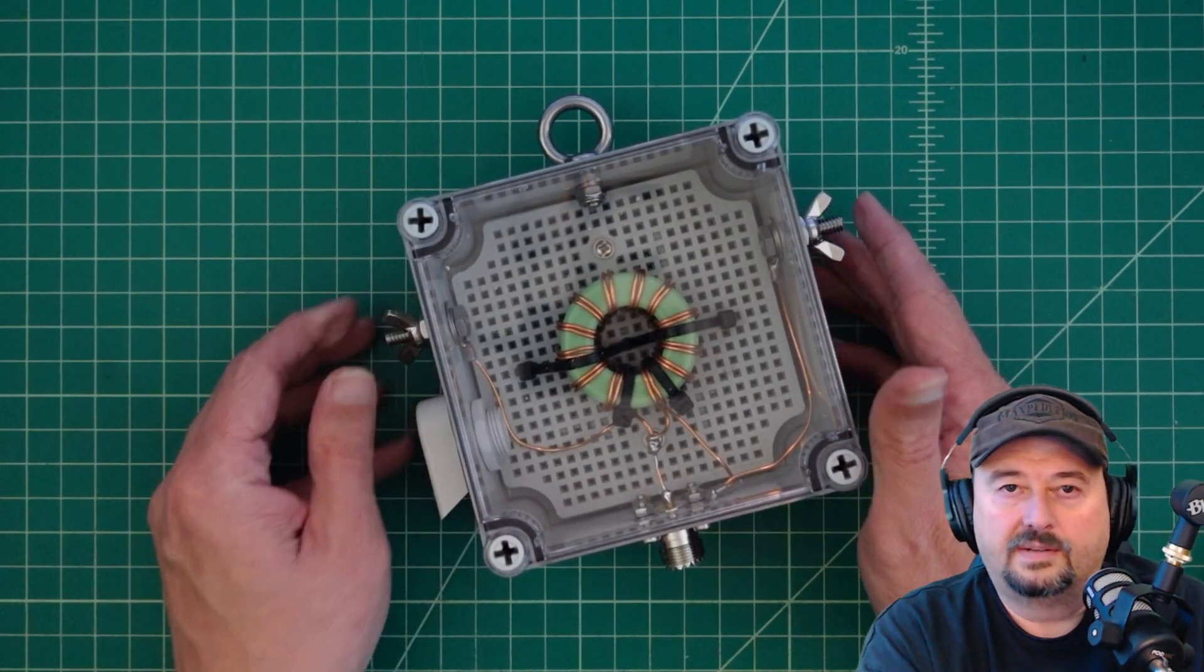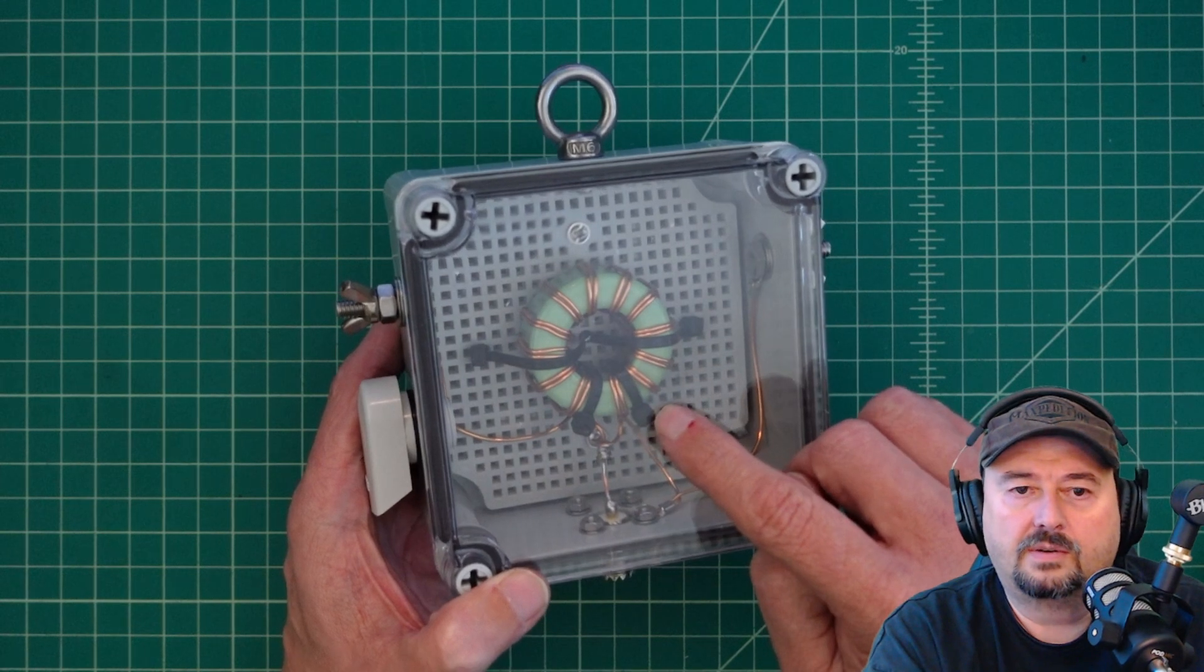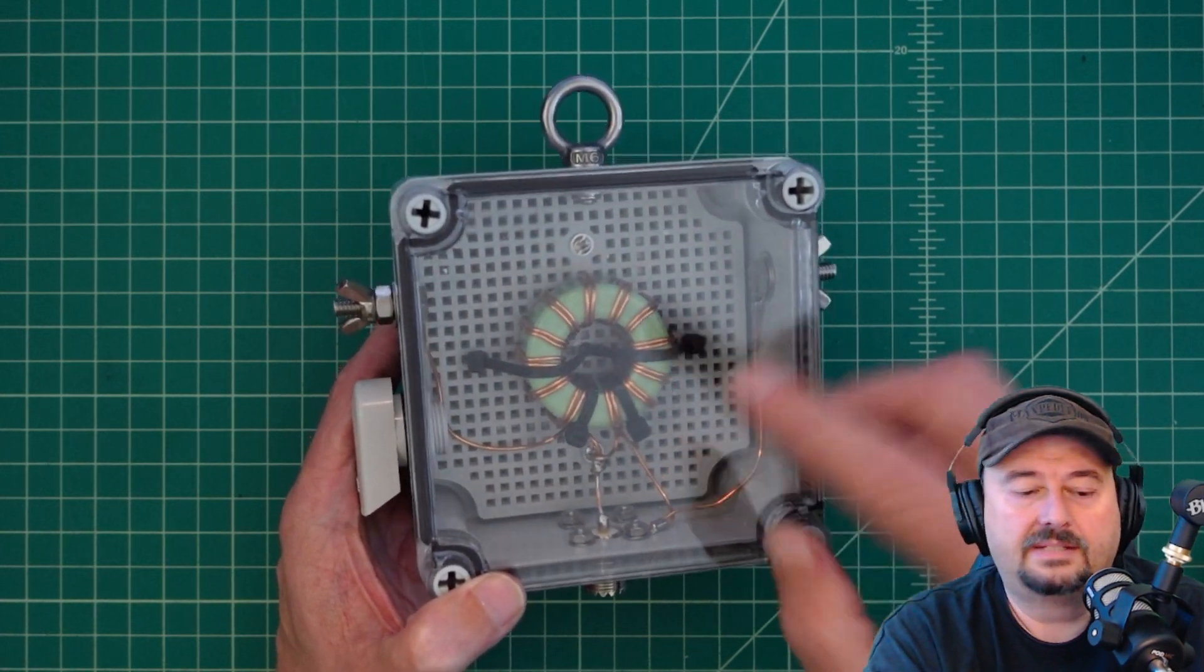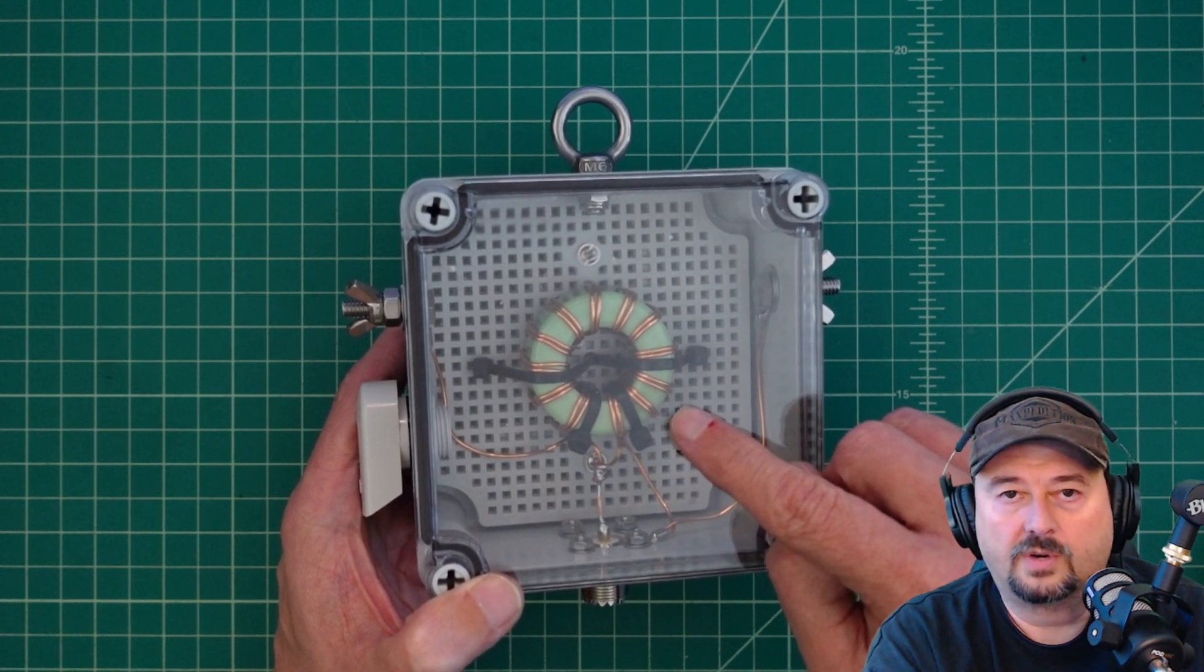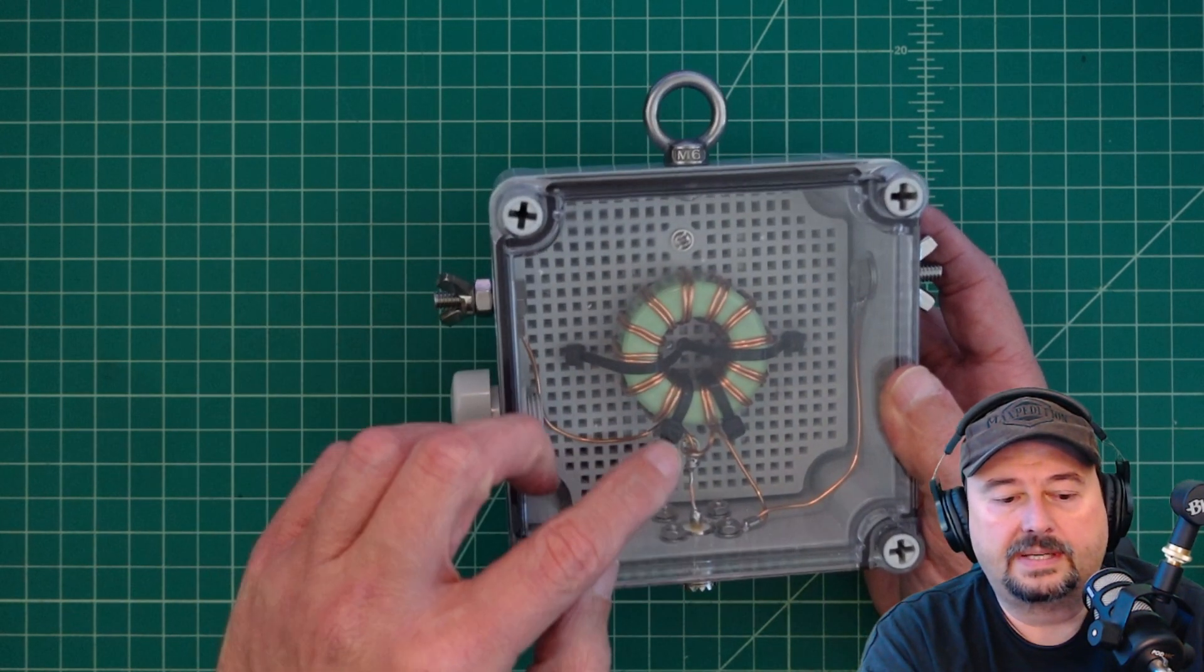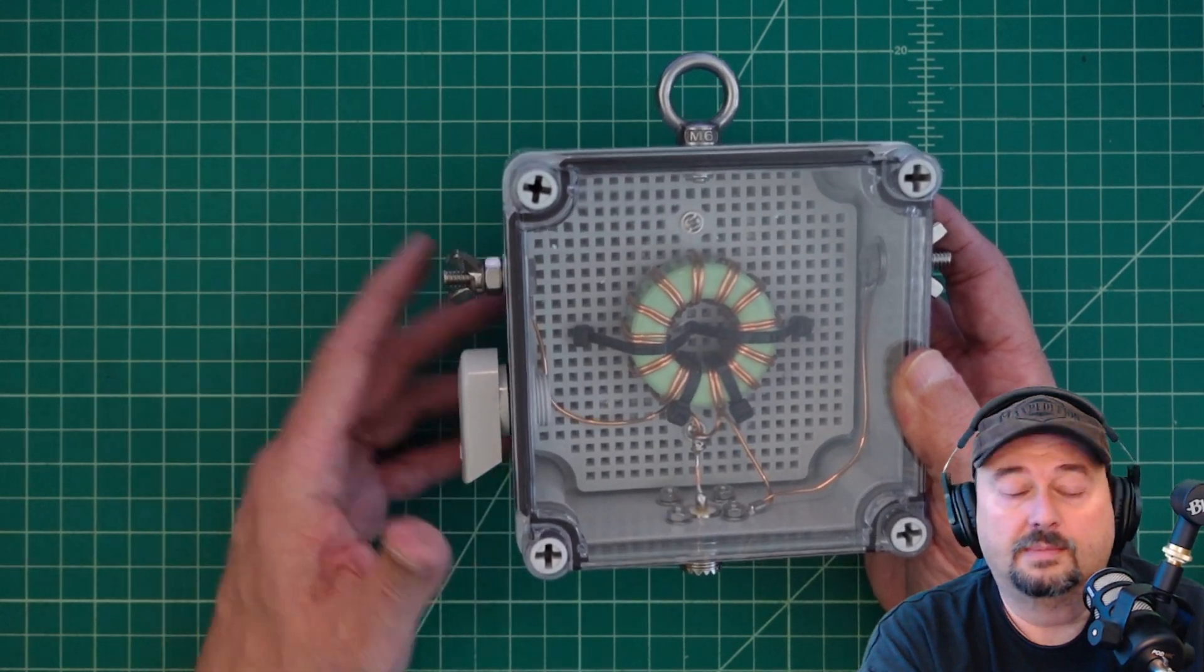I know some folks right out of the gate are going to be like, what kind of core is that? Why are you using that core? This is a Toroidal Core 184, so it's 1.84 inches across. It's a powdered iron core and it's a Type 52, my apologies.